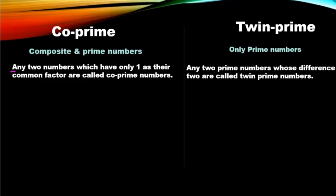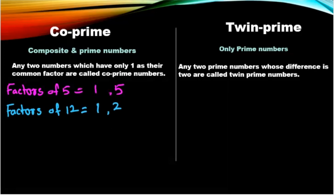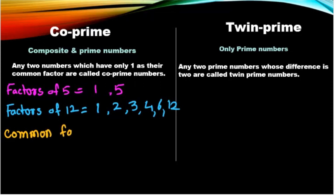In co-prime numbers, let us consider 5 and 12 as an example. The factors of 5 are 1 and 5, since 5 is a prime number. Now the factors of 12 — since 12 is not a prime number — are 1, 2, 3, 4, 6, and 12.